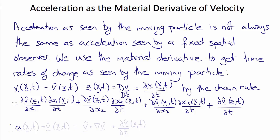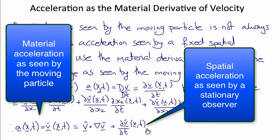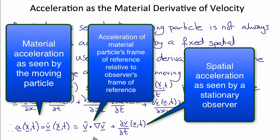So the Lagrangian or material expression for the acceleration as seen by the moving particle — a of big X and t, or v-dot of big X and t — written in terms of the spatial view would be v-hat dot grad v plus del v-hat del t. The difference between the acceleration as seen by the moving particle and as seen by the fixed observer is this relative acceleration term, v-hat dot grad v, which depends not on time rates of change of velocity but on spatial differences in velocity.